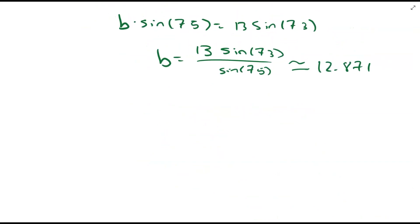So if you're given the angle-side-angle or angle-angle-side situation, they basically work out just like this example — it doesn't really matter which one you get. They're both essentially the same problem: find the third angle and then solve for the two sides. Nothing weird can happen, presuming you're in the right calculator mode.